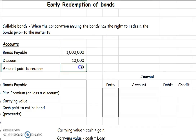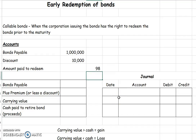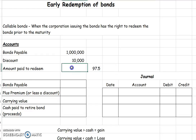Then you would have to be given the amount or the percentage at which you're going to redeem these bonds. Let's say that we told you that we were going to redeem these bonds at 97.5 — and again, that really means 97.5 is a percentage.